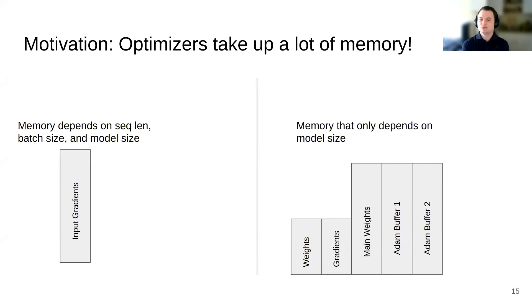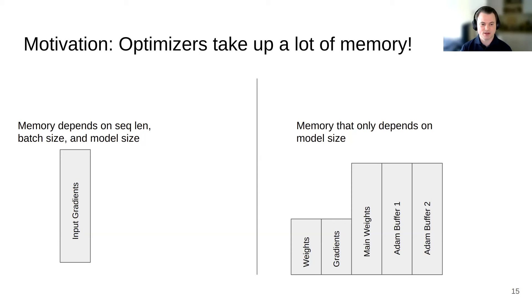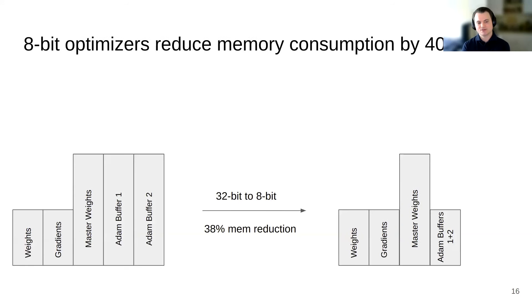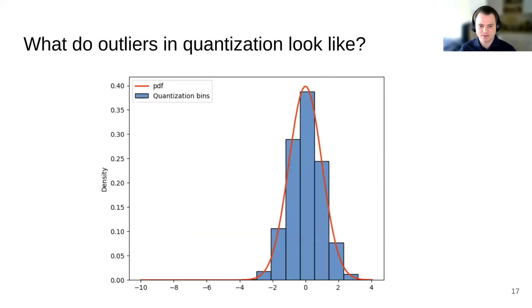Why 8-bit optimizers? Here is a representation of the memory a neural network uses during fine-tuning or training. On the left side are values dependent on the number of parameters and other things like sequence length or batch size. On the right side, memory dependent only on model parameter count — these are the weights, gradients, main weights for 16-bit precision training, and then the Adam buffers, the optimizer states. The optimizer states are quite large: they're in 32-bits, and you have two of them. If we transform these optimizer states from 32-bit to 8-bit, we reduce overall memory footprint by 40%.